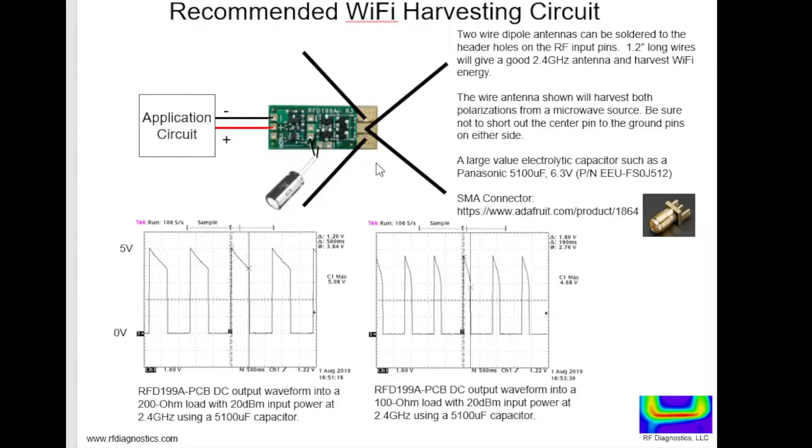Here's one possible Wi-Fi harvesting circuit that you can build with the RFD199A PCB. You can solder two wire dipoles that are 1.2 inches long. These two antennas can collect both polarizations, really a single antenna with two active arms orthogonal to each other.